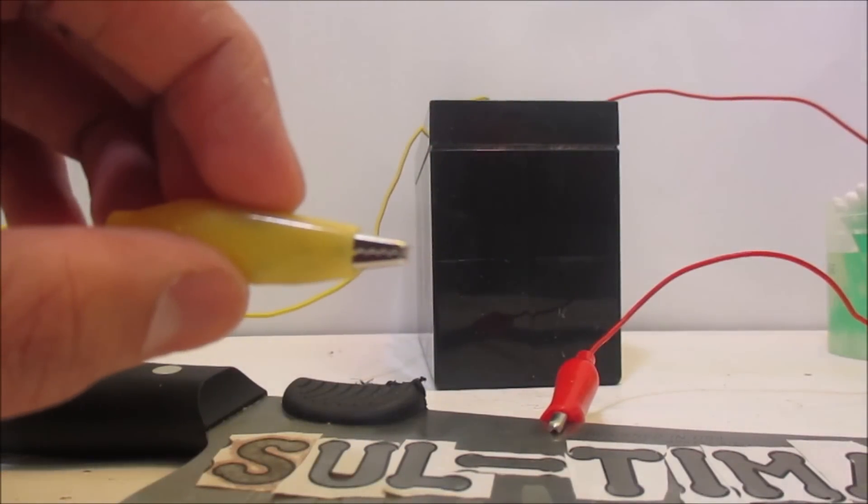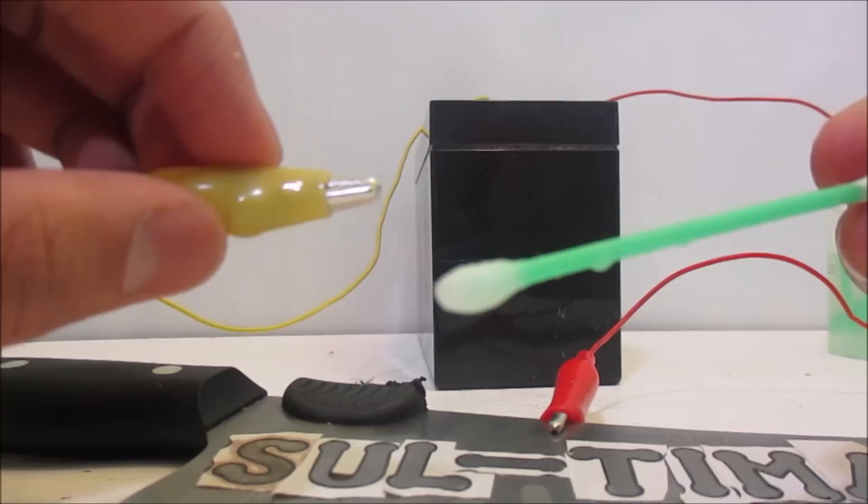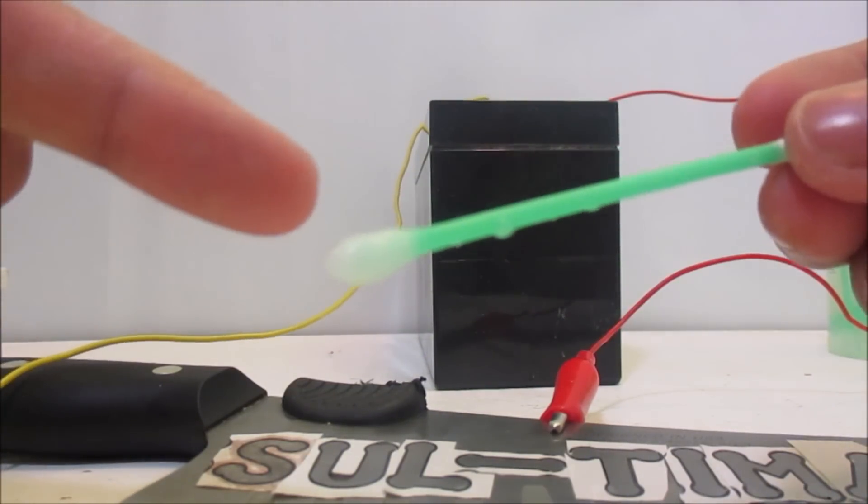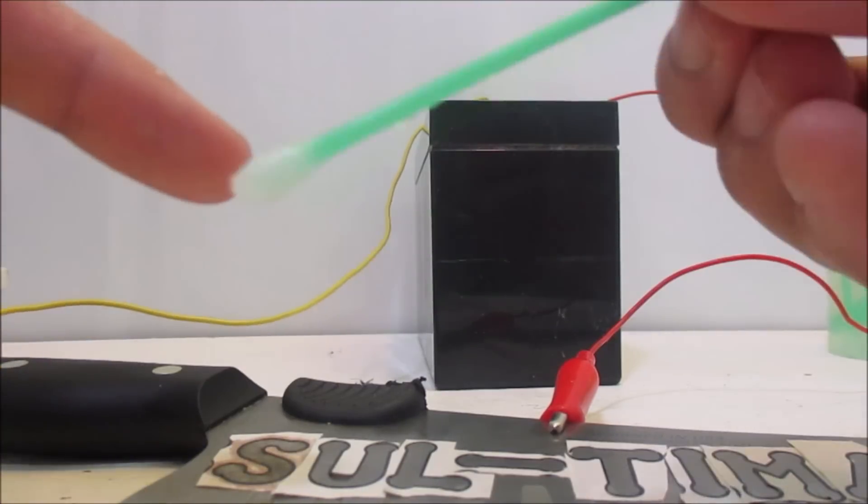You are now going to want to take the cotton swab and clip it onto the negative charge of the clip. Make sure the part where the salt and vinegar was absorbed is touching the clip.